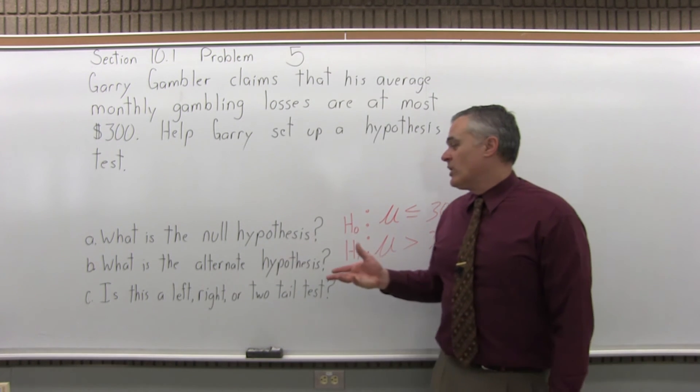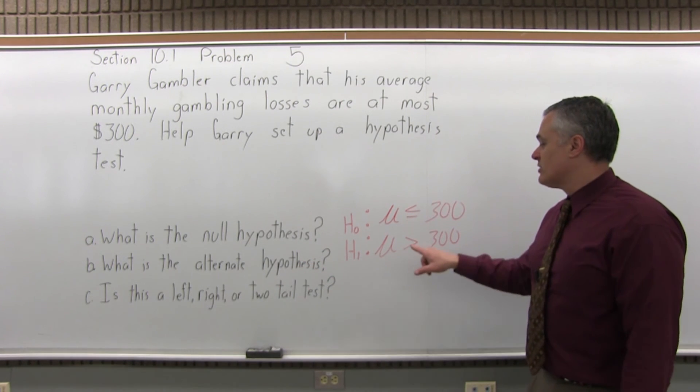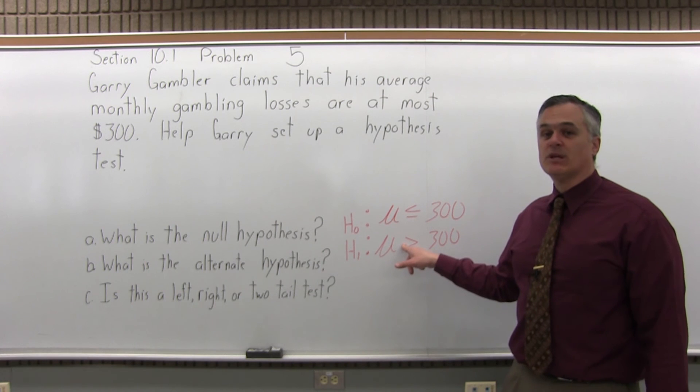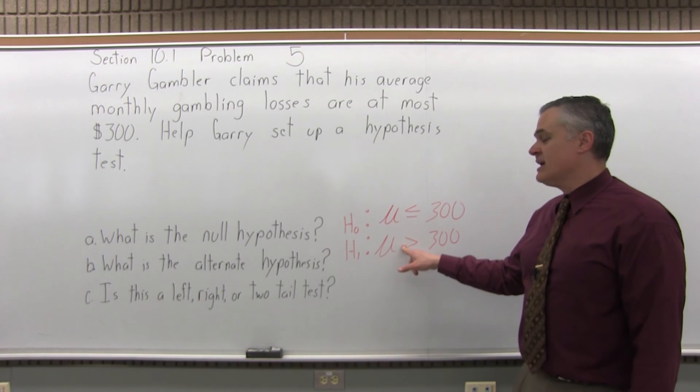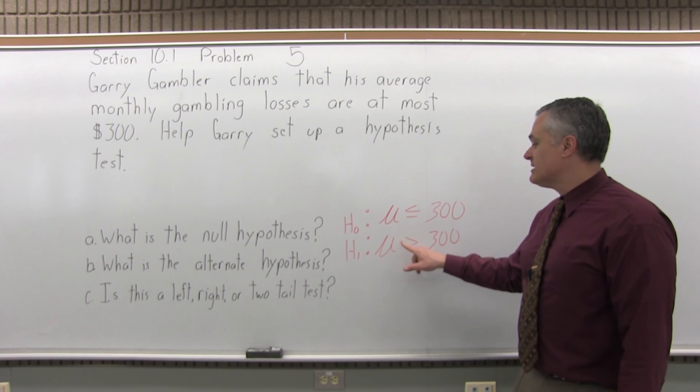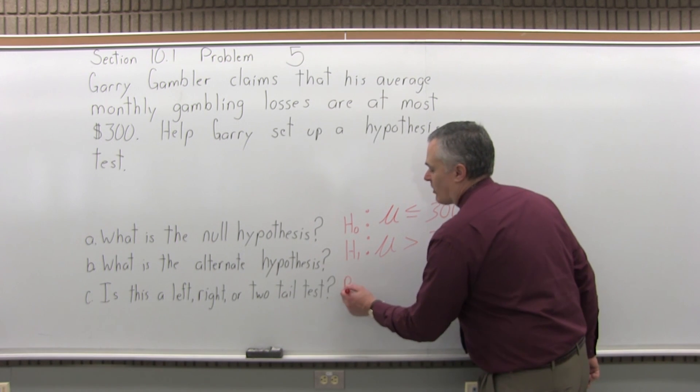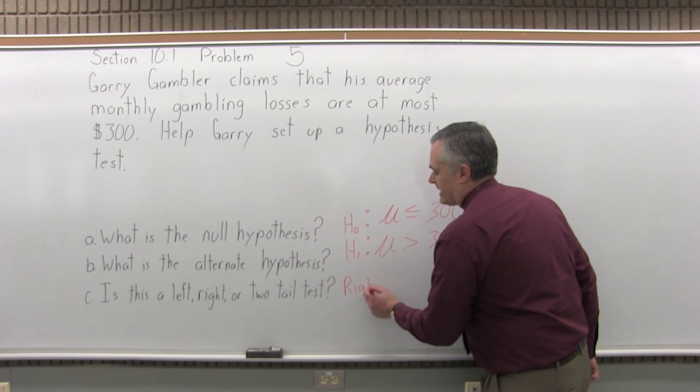Now for C, is this a left, right, or two tail test? To determine if it's left, right, or two tail, you want to look at the inequality symbol in the alternate hypothesis and see which way it points. The alternate hypothesis has a greater than symbol, which points to the right. So this is a right tail hypothesis test.